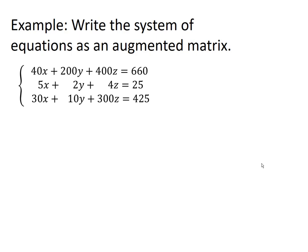Example: write the system of equations as an augmented matrix. Our system is 40x plus 200y plus 400z equals 660. Second equation is 5x plus 2y plus 4z equals 25. Third equation, 30x plus 10y plus 300z equals 425.